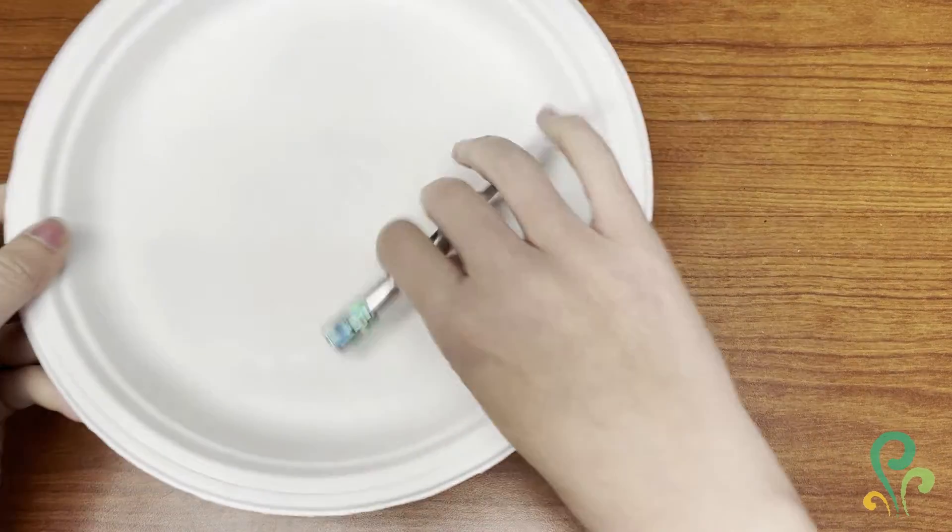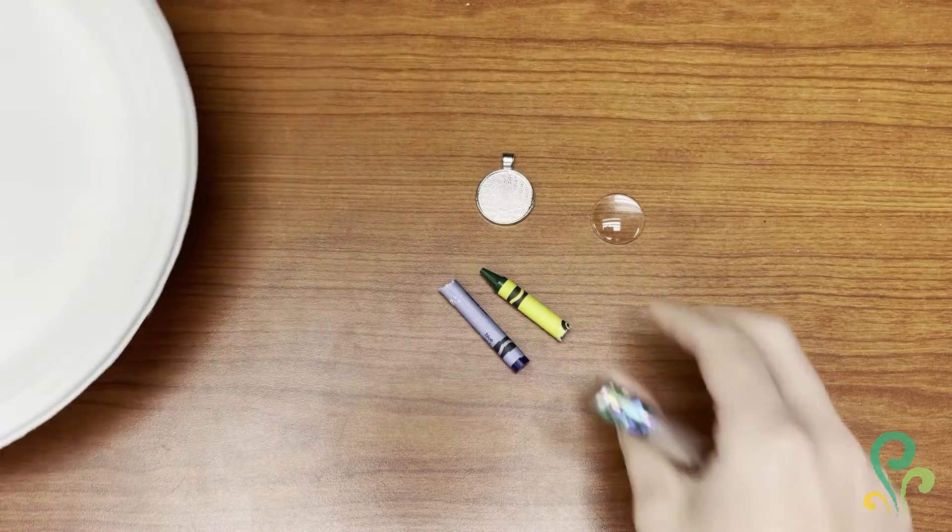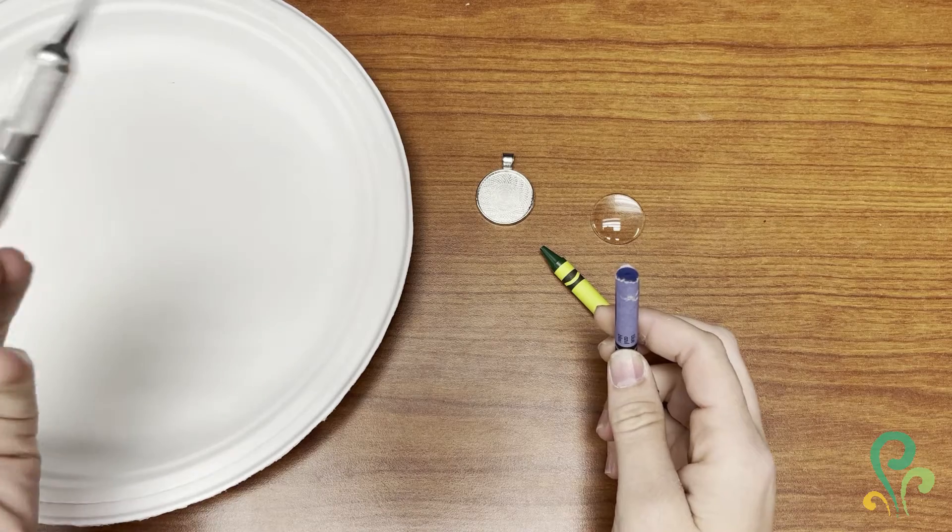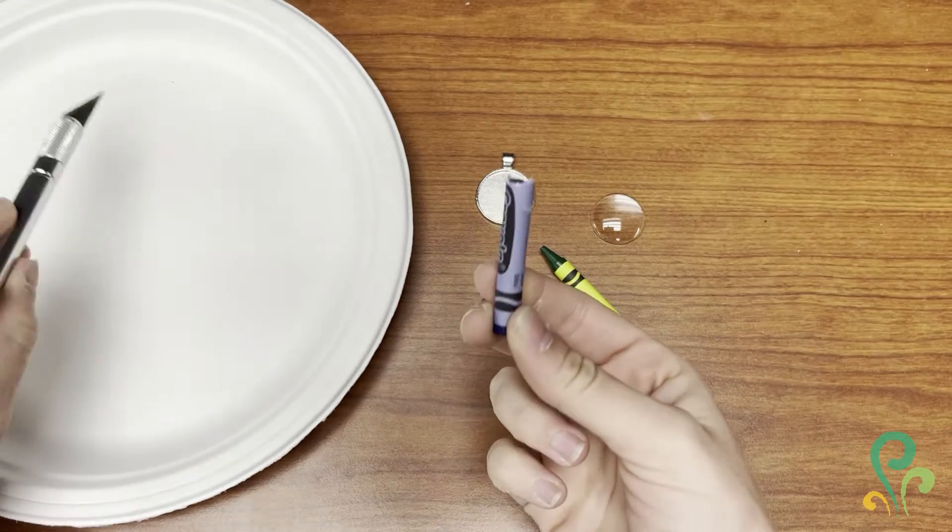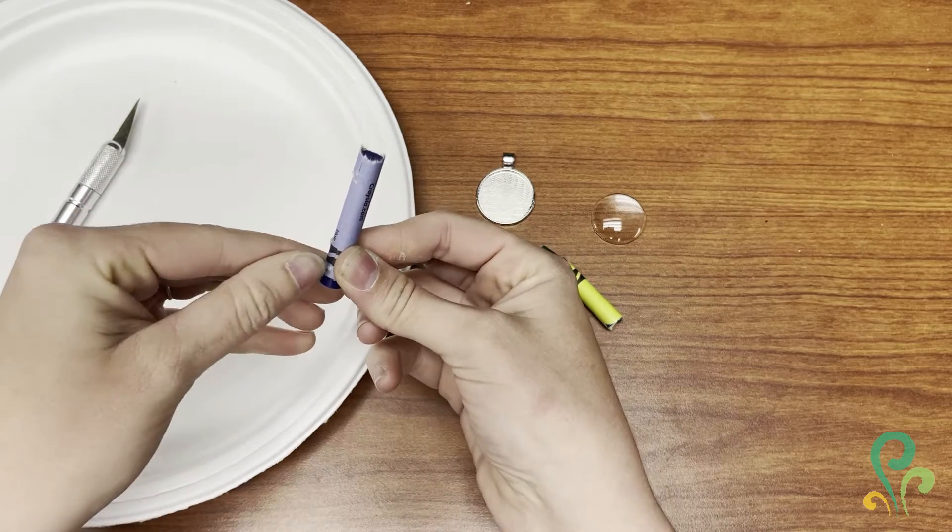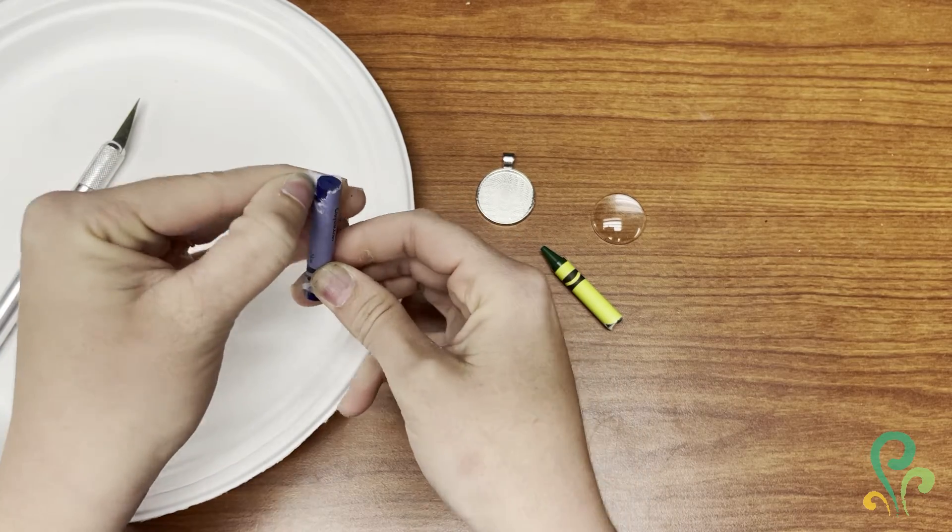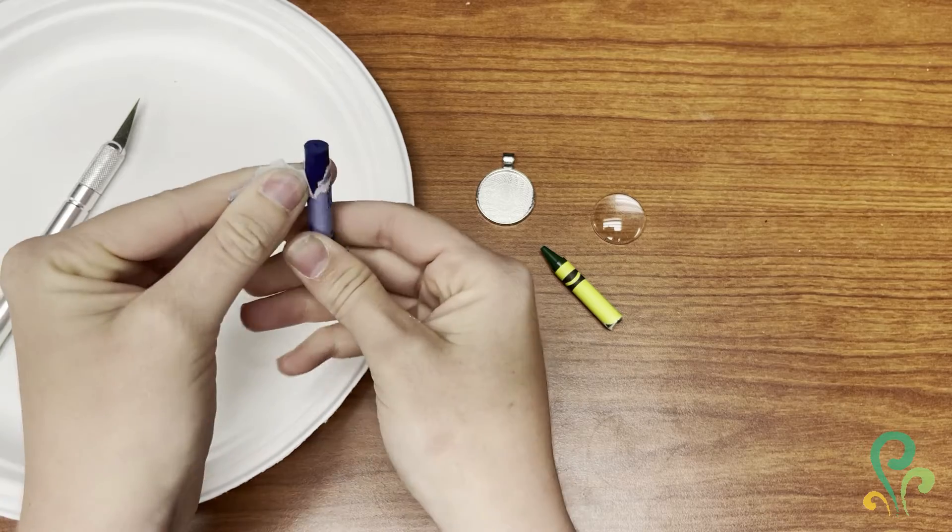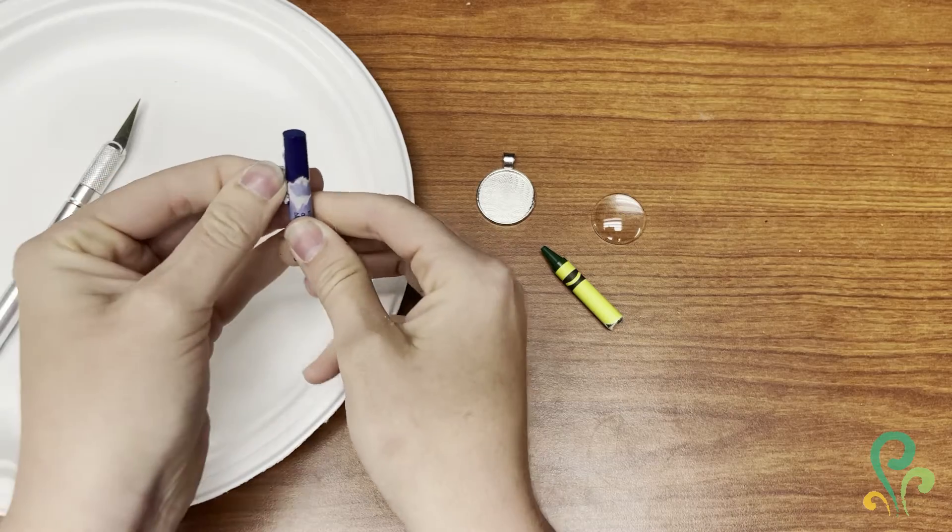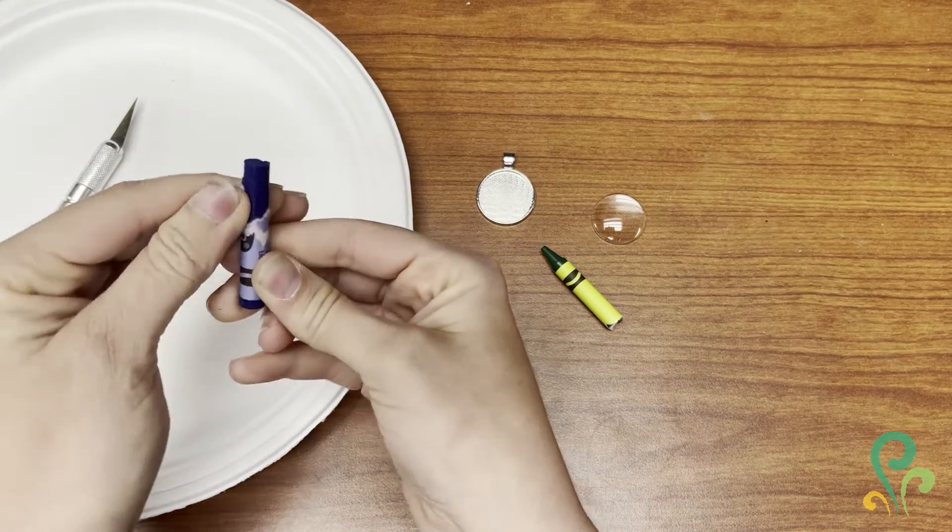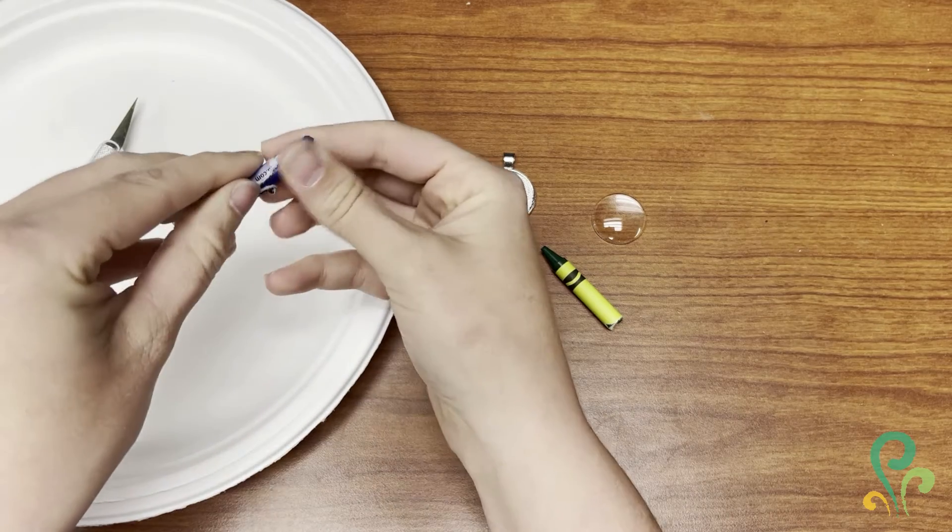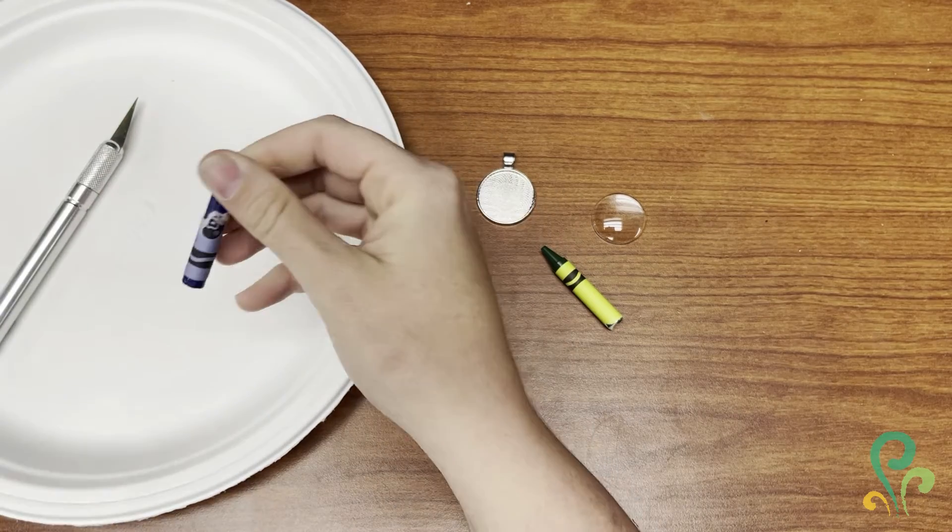To keep your workspace clean, you're gonna need a paper plate or something that you can get crayon shavings on. I'm choosing to use an exacto knife to get shavings of my crayon, but you can use a grater or scissors. Just be very careful because you are working with a sharp object. I'm going to peel off the paper of my crayons and we are going to get some shavings made.